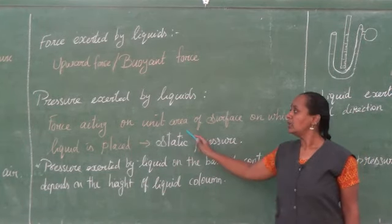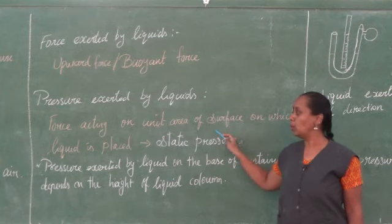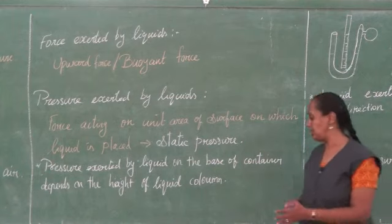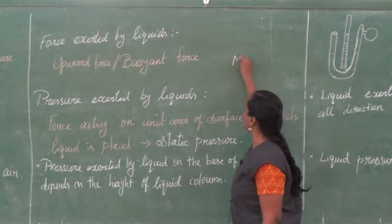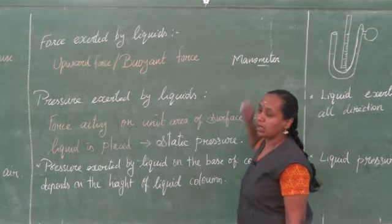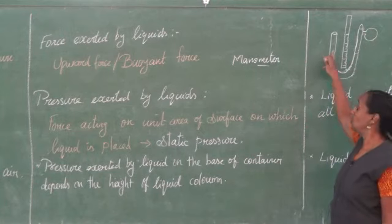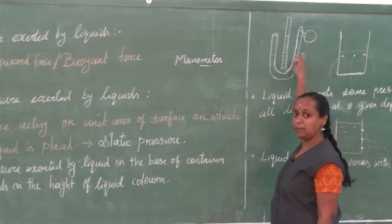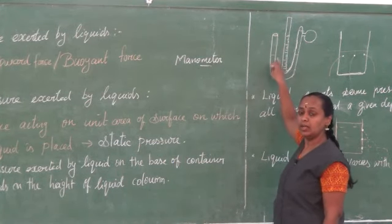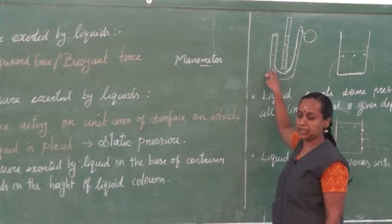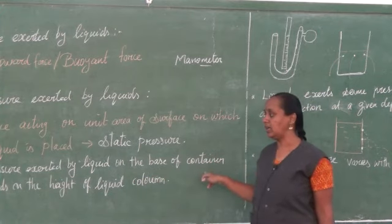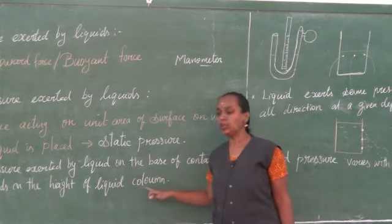We have studied about static pressure and the instrument used to measure pressure — the manometer. It is a simple apparatus shaped like a U-tube, having two limbs, with a scale in between to measure the height of the liquid when you apply pressure. The pressure exerted by liquid on the base of the container depends on the height of the liquid column.